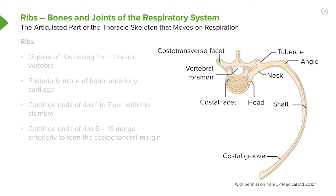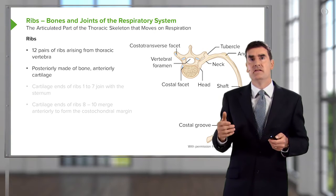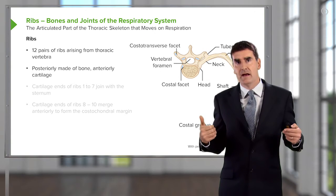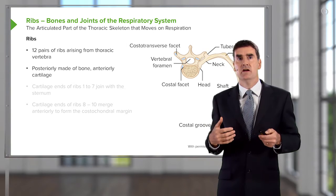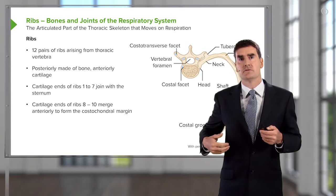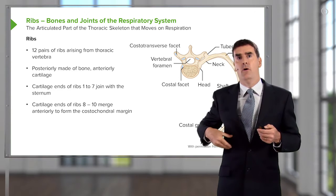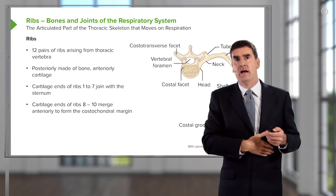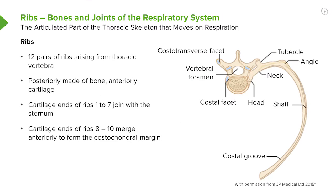The ribs are the bones joining the vertebrae and the sternum. There are 12 pairs of ribs, one arising from each thoracic vertebra. They are made of bone posteriorly, but anteriorly they merge into cartilage. These cartilages form the costal chondral margin — which you can feel between the abdomen and the thoracic cavity on both sides — and ribs one to seven also merge to form a joint with the sternum anteriorly.